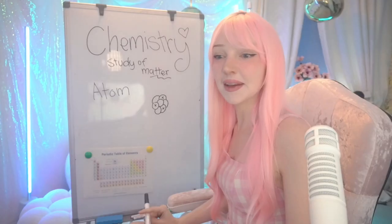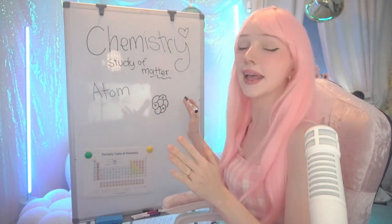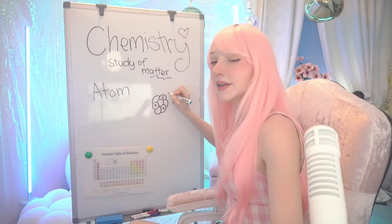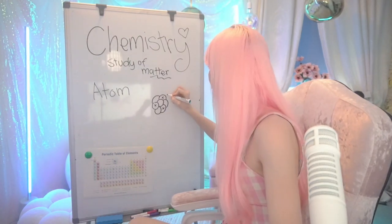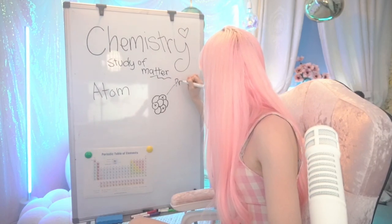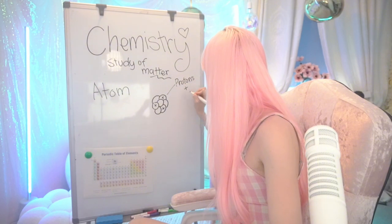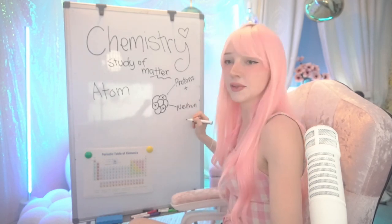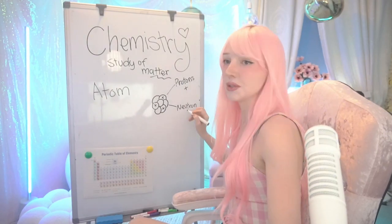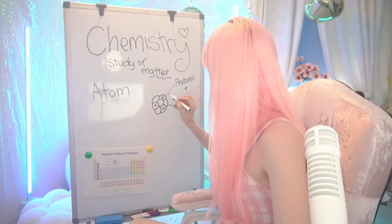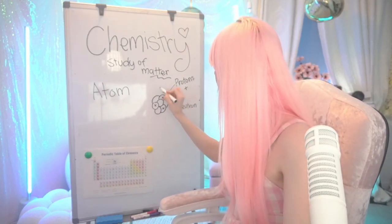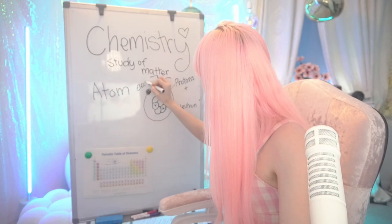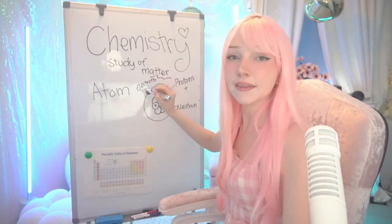There's chemistry between two humans, and chemistry between elements is kind of similar. Our protons are going to be positively charged particles, so protons are positive. Neutrons are neutral. And floating around the outside of our nucleus we have electrons, and electrons have a negative charge.